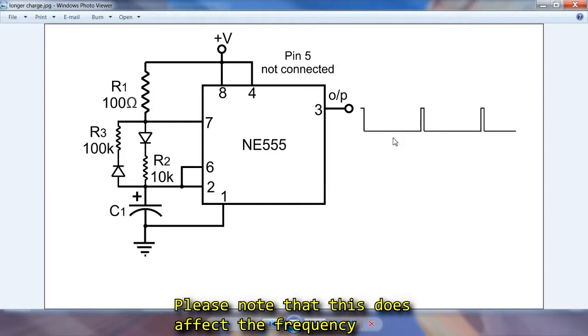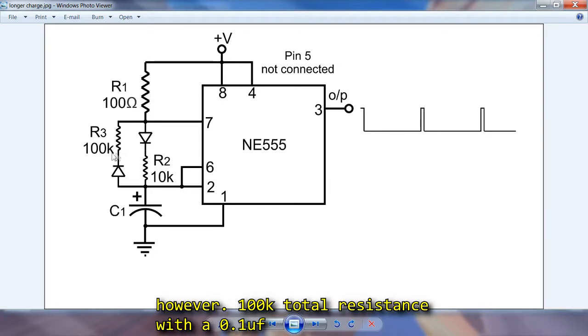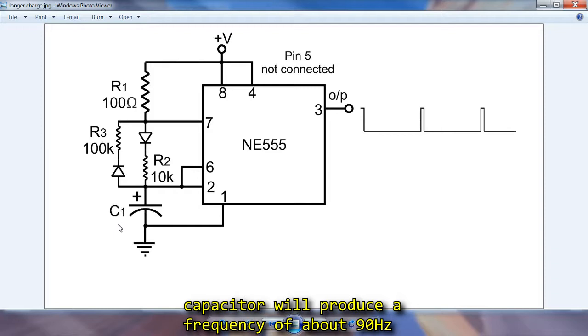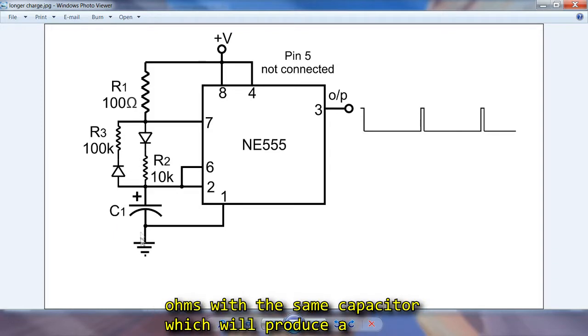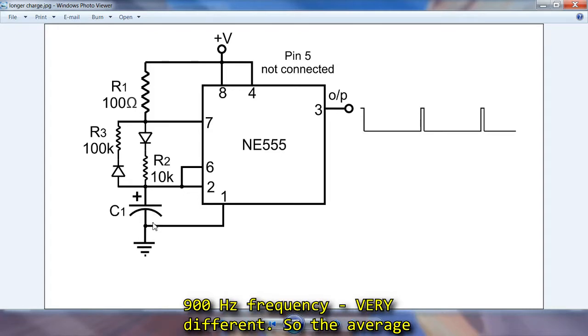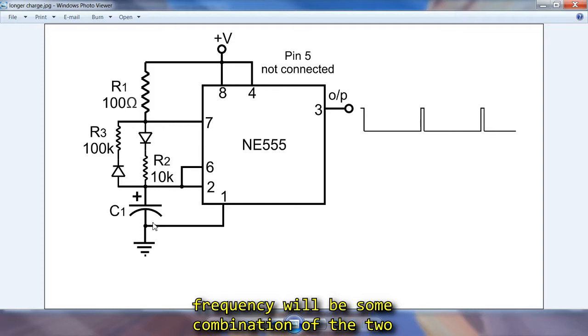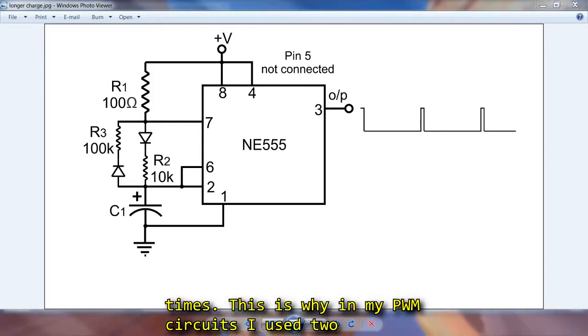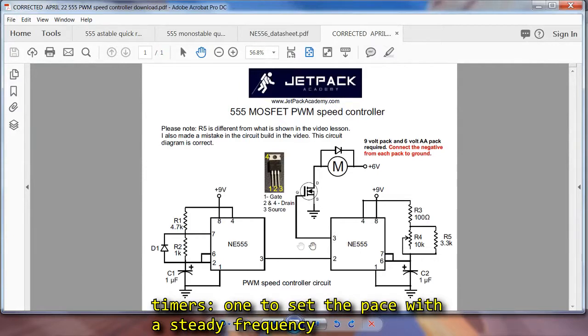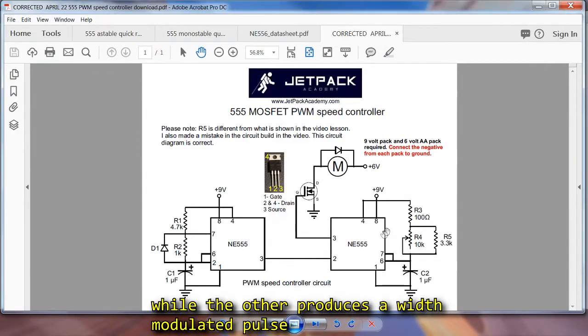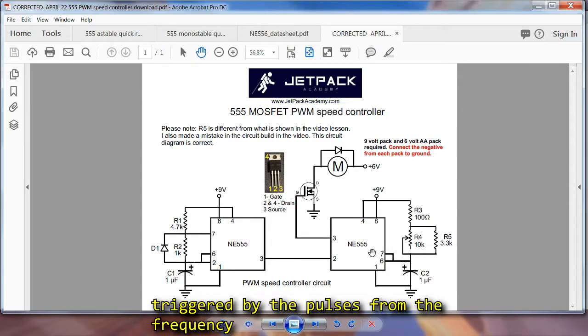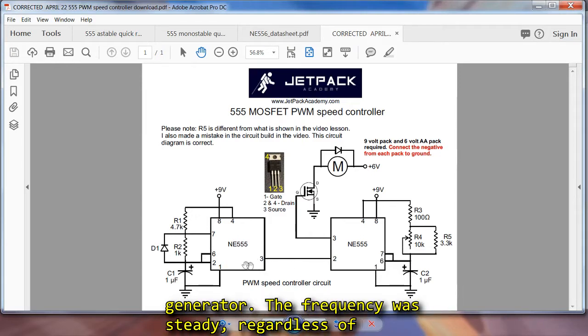Now please note though, this does affect the frequency however. A 100k total resistance with say a 0.1 microfarad capacitor will produce a frequency of about 90 Hz, but on the charge cycle, you've got roughly 10,000 ohms with the same capacitor, which will produce a 900 Hz frequency, very different. So the average frequency will be some combination of the two times. This is why in my PWM circuits, I used two timers. One to set the pace with a steady frequency, while the other produces a width modulated pulse triggered by the pulses from the frequency generator. The frequency was steady, regardless of the pulse width.